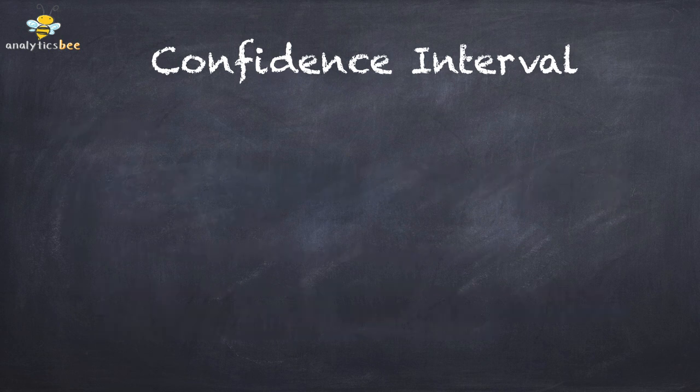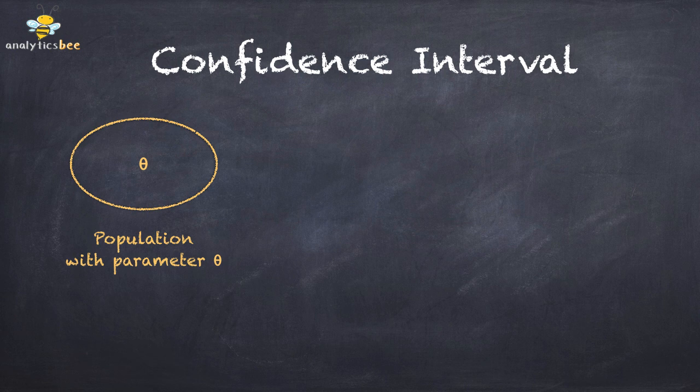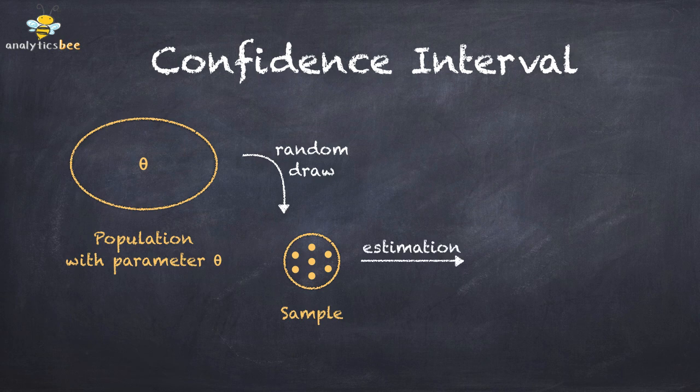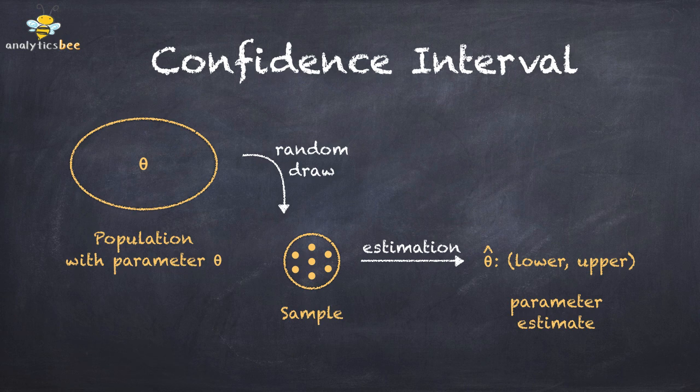Let's take a look at what it means. We have a population with a distribution parameter, theta. We can draw a random sample from it and apply an estimation procedure to obtain an interval estimate defined by a lower bound and an upper bound.